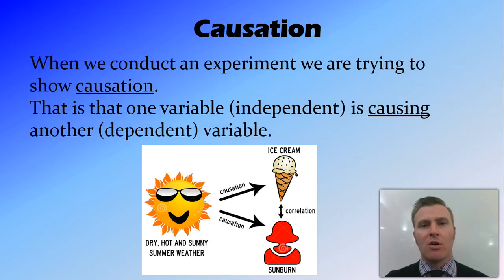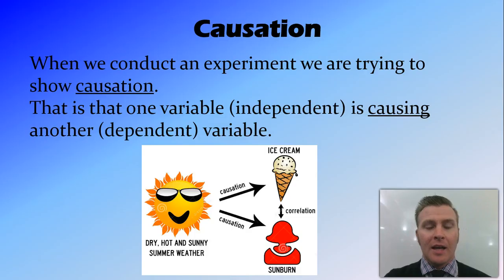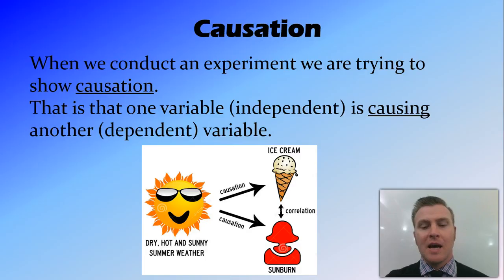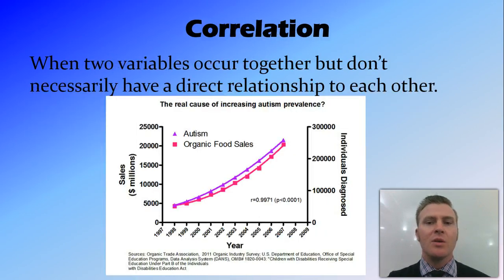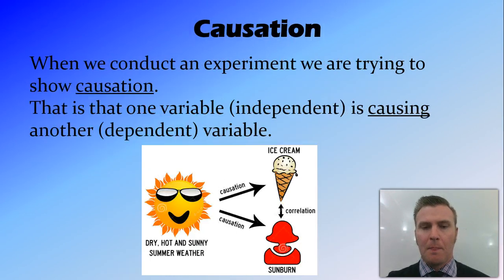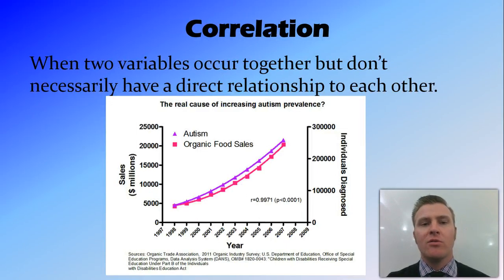Causation is what we're trying to show when we do these experiments — that one variable, the independent variable, is causing the other variable, the dependent variable. In this diagram, dry, hot, and sunny summer weather causes ice cream sales as well as causing sunburn, so there's a direct relationship between those two. There is not a direct relationship between ice cream sales and the amount of sunburn — they occur at the same time but don't have any effect on each other. We call this correlation, when two variables occur together but aren't directly related to each other.